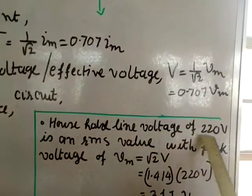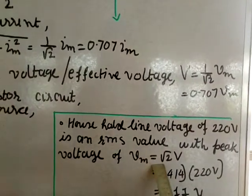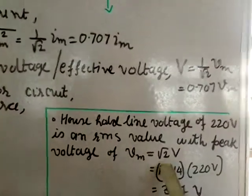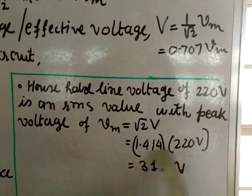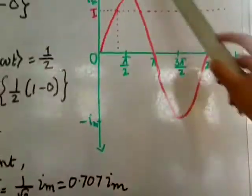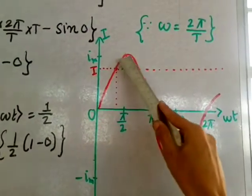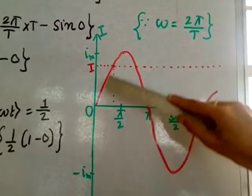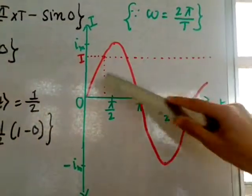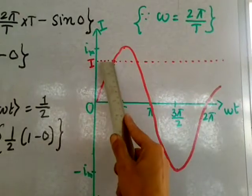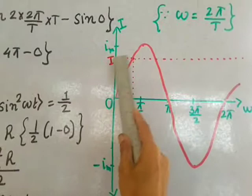The line voltage of 220 V is an RMS value. The peak voltage is V_m = √2 · V_RMS = 1.414 × 220 ≈ 311 V. On the sine graph shown, the RMS value appears at a certain point below the peak. The peak value is the maximum of the sinusoidal curve, the negative peak is the minimum, and the RMS value lies between them.